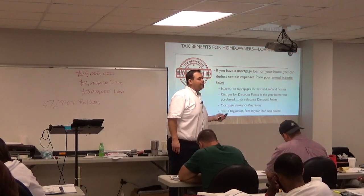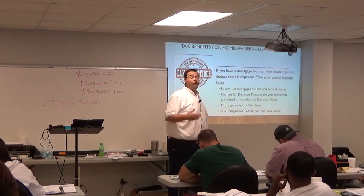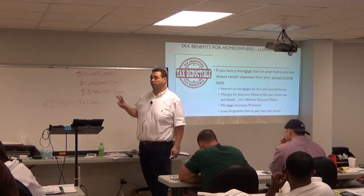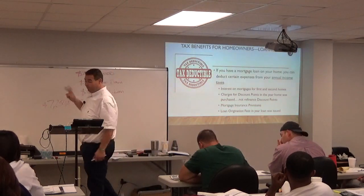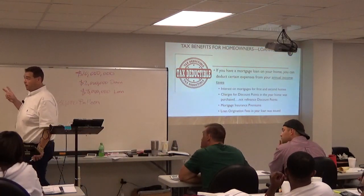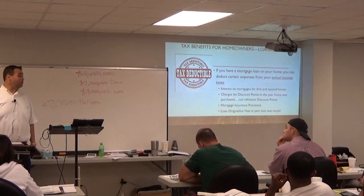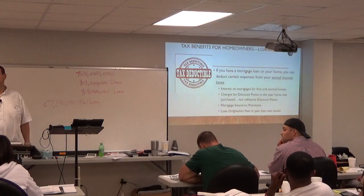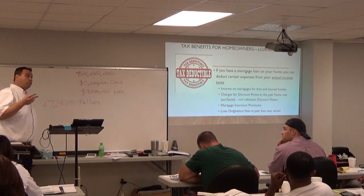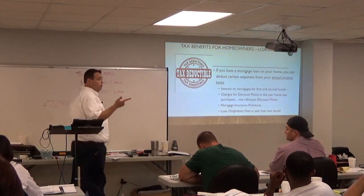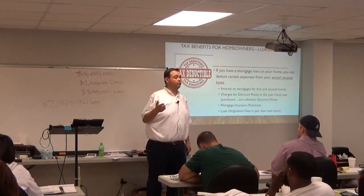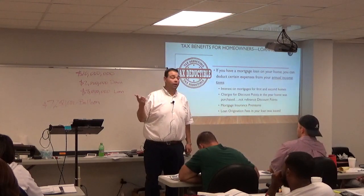Examples of things you can deduct as a result of owning your own home and having a mortgage: the interest on first and second homes. Any interest you pay on up to two homes is deductible. By the way, an RV or camper counts as a home according to the IRS. So you could deduct the interest on your primary residence and on an RV — up to two homes.